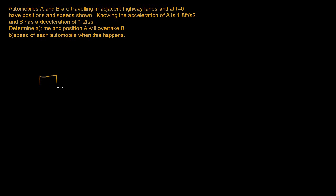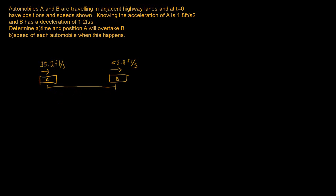This problem on motion of several particles states that automobiles A and B are traveling in adjacent highway lanes and at time zero have the positions and speeds shown. Car A is moving in this direction at 35.2 feet per second, and somewhere in front of it there is car B moving at 52.8 feet per second. The distance separating these two cars is 75 feet, so car A's position is zero and car B's position is 75.